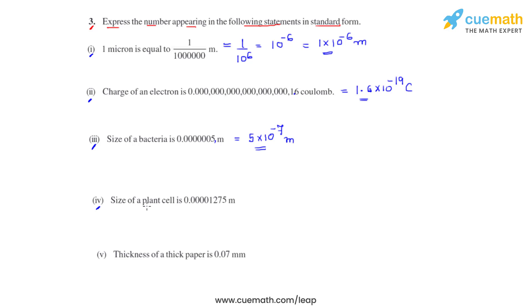The fourth bit says size of a plant cell is 0.00001275 meters. To express this in standard form, the decimal point must be shifted between 1 and 2.